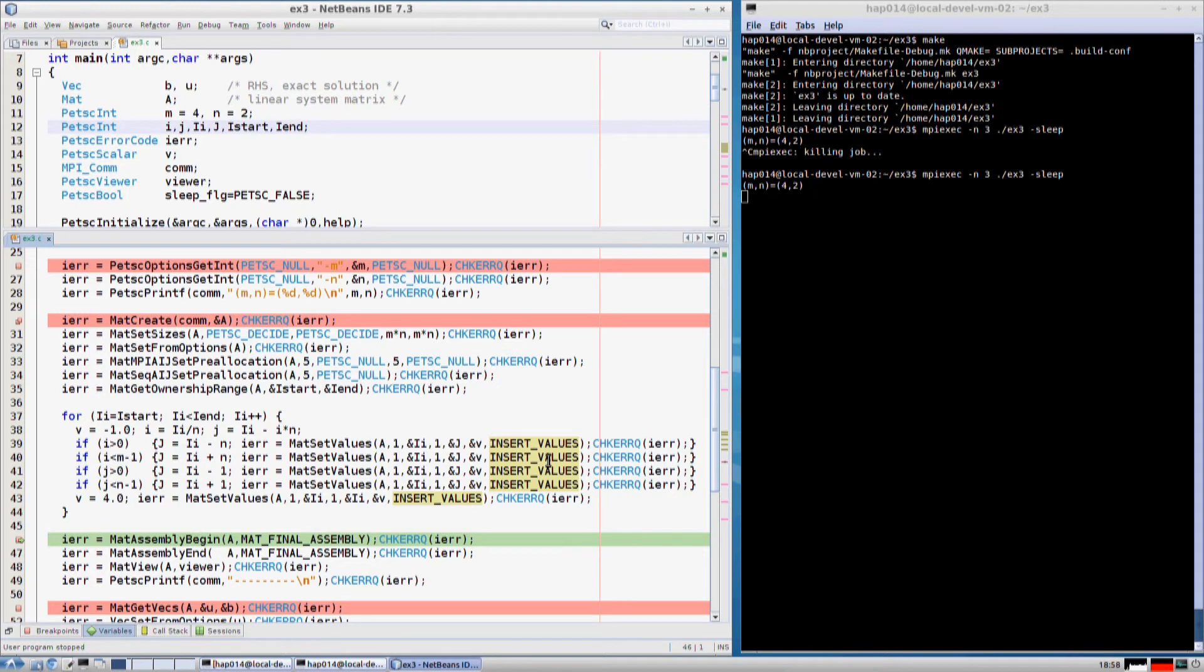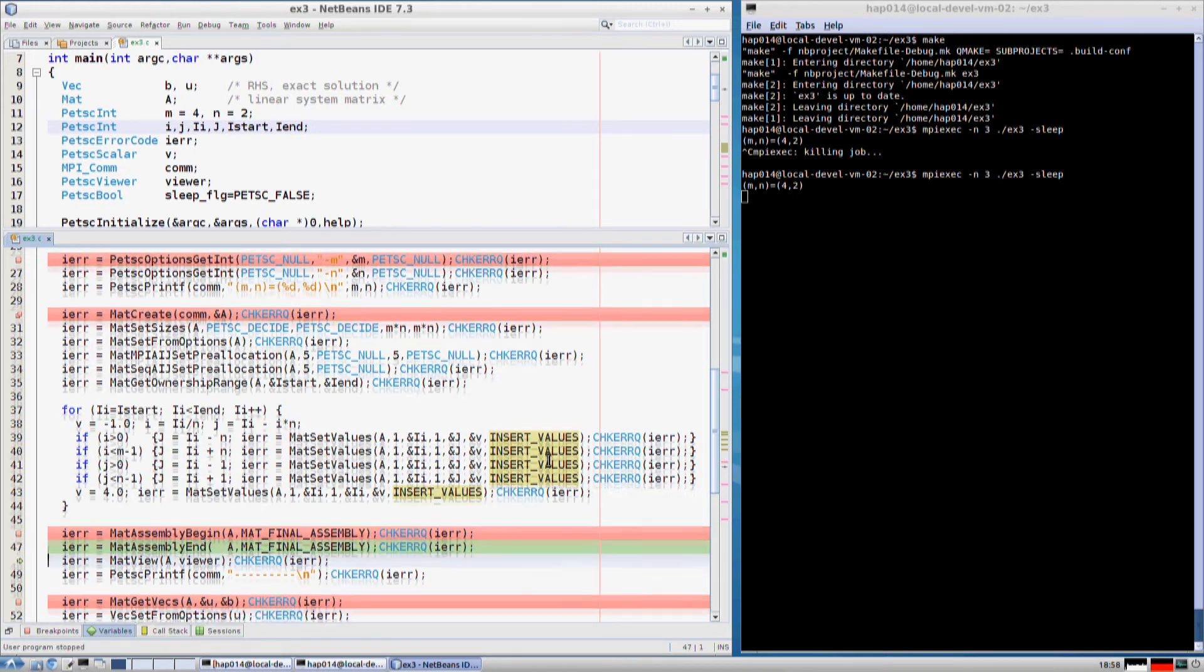To finish the assembly phase we call MatAssemblyBegin and End. Now we can view the matrix.